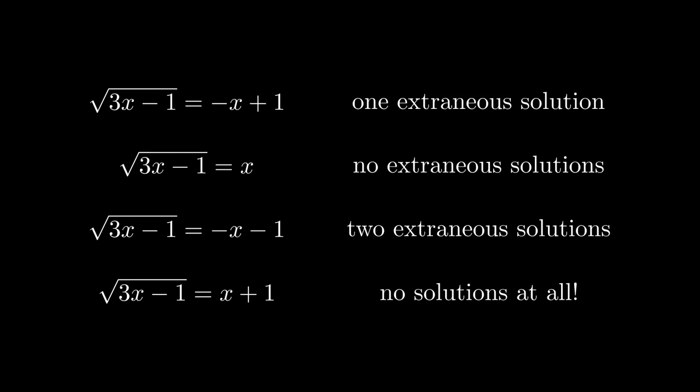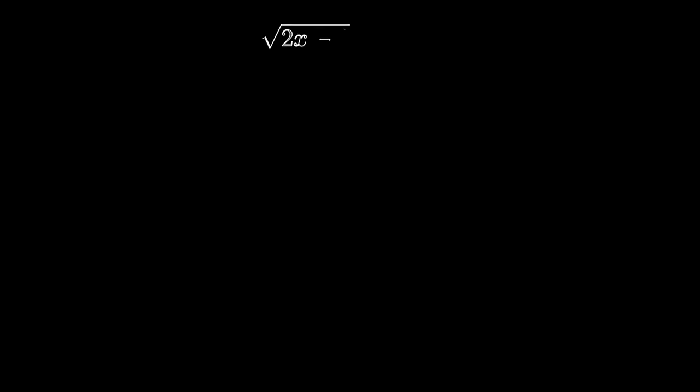What I'd like to do here is visualize that algebra, and use the graphical picture of extraneous solutions to determine exactly what makes them happen. Let's go back to that equation we solved before, root 2x minus 1 equals x minus 2.